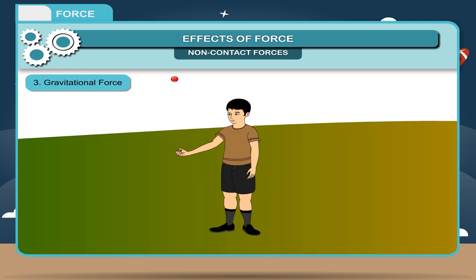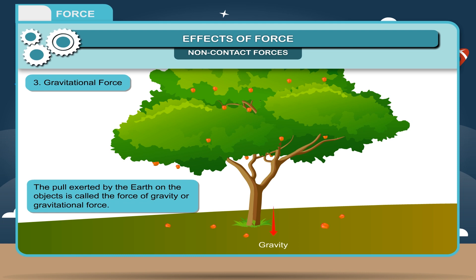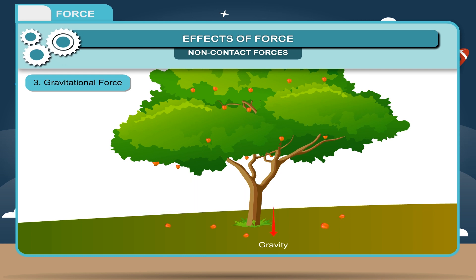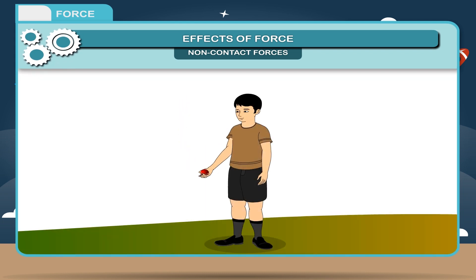Gravitational force: Whenever an object is thrown vertically upwards, it comes back down to the earth. Mangoes falling from a tree always come down because the earth pulls all objects towards its center. The pull exerted by the earth on objects is called the force of gravity or gravitational force. The force by which an object is attracted towards the earth is called its weight — defined as the force with which a body is attracted towards the center of the earth. Activity: When a rubber ball is thrown vertically upwards, it comes back down due to gravitational force.